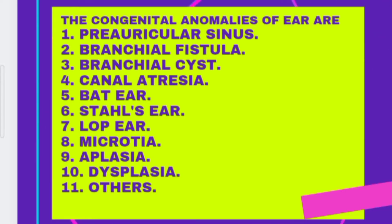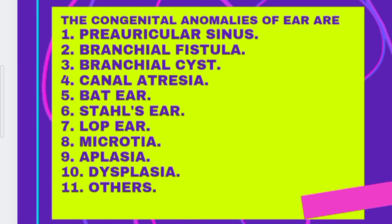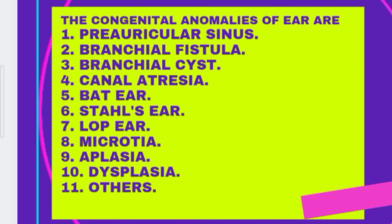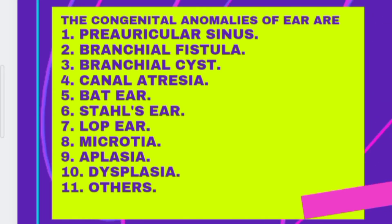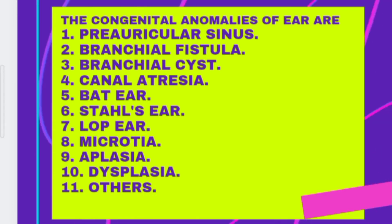The congenital anomalies of the ear are: preauricular sinus, branchial fistula, branchial cyst, canal atresia, bat ear, Stahl's ear, lop ear, microtia, aplasia, dysplasia, and others.